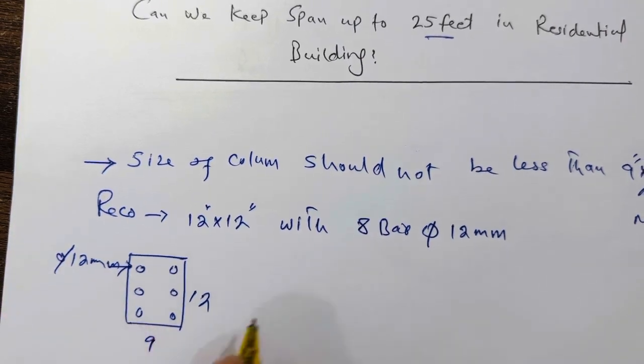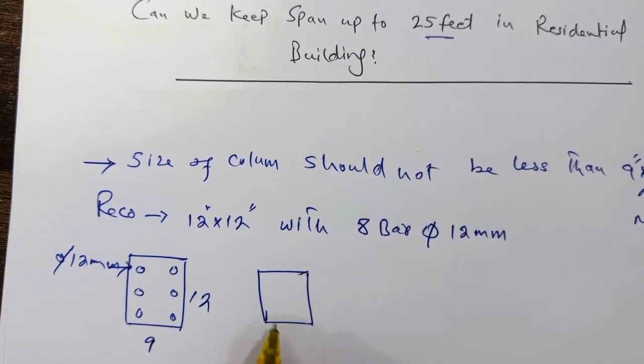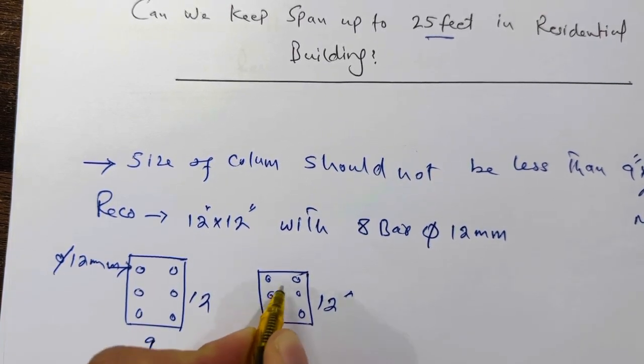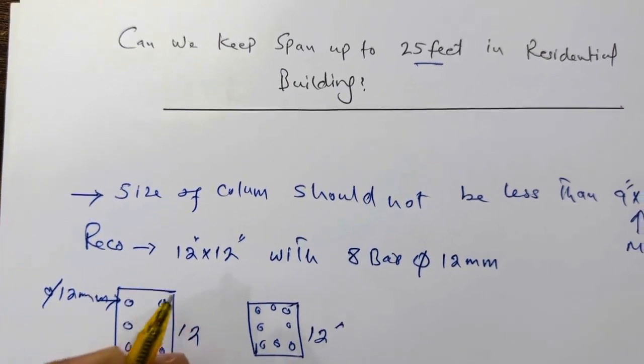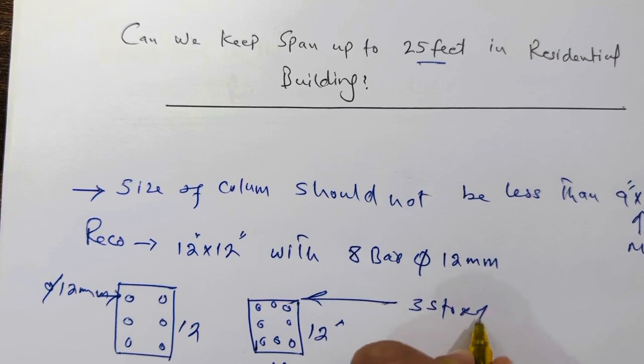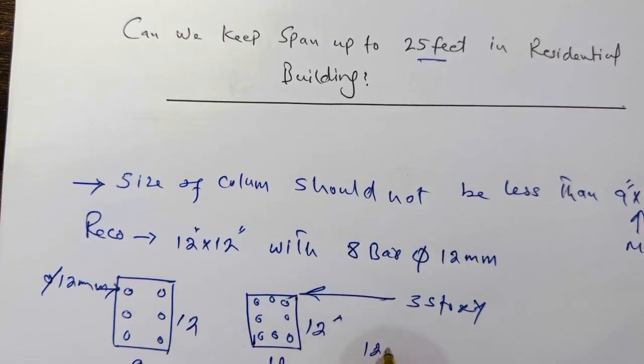This is first one, and the second one: the size should be 12 inches by 12 inches with eight bars if that is up to three story. For three story, if the span is up to 25 feet, the diameter should be 12 millimeter.